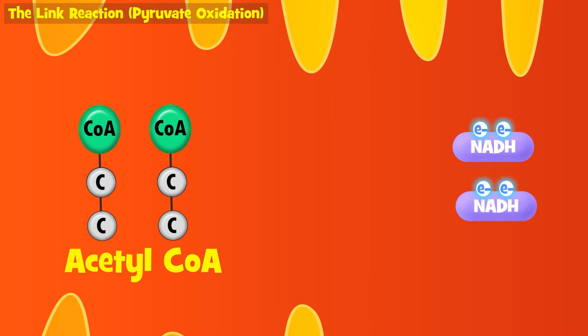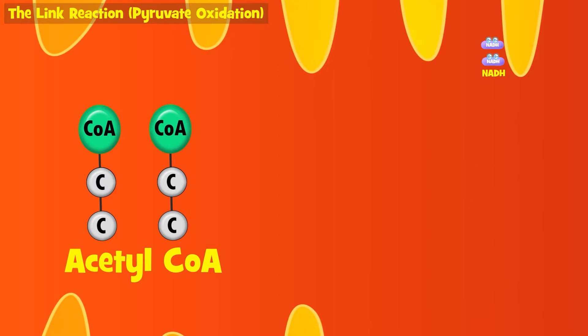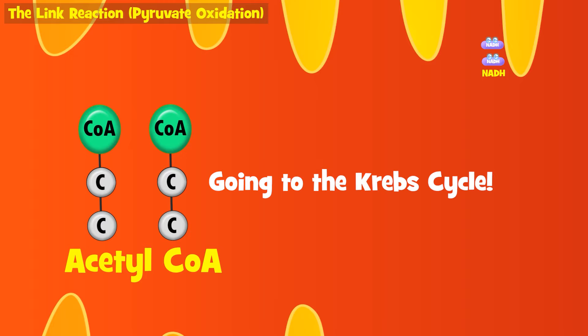The NADH will be used in the electron transport chain, which is where most of our ATP comes from, and the acetyl-CoA will be fed into the Krebs cycle, our next stage. This is why the reaction is called the link reaction — it links glycolysis to the Krebs cycle, allowing respiration to continue.